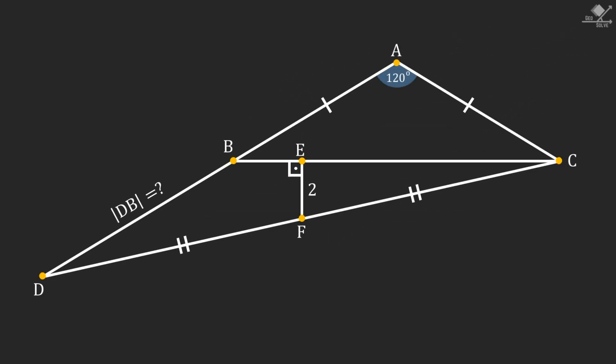This time we have this nice triangle question. We are asked the length of the line segment DB for the given angles and equalities. I'll show you two different solutions for this question. Let's start with the first one.